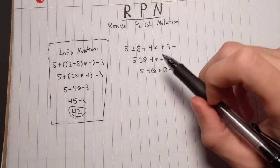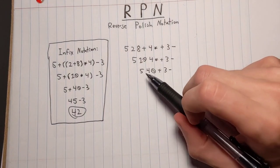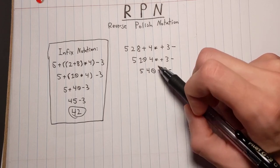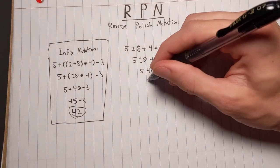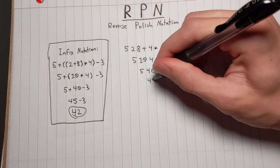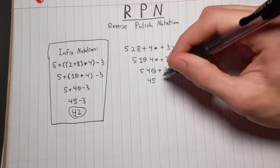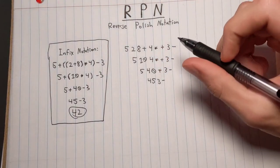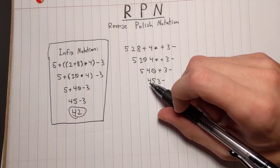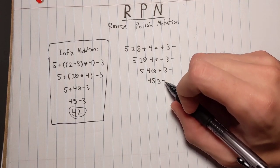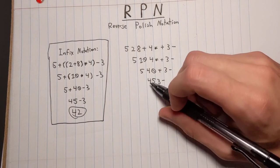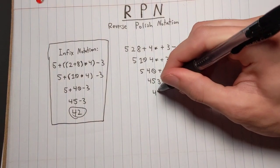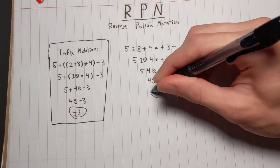Then we apply the plus to the two leftmost operands — 5 and 40 — which gives us 45, then 3, minus. Now all we have is 45 and 3, and the minus gives us 42 — our answer.